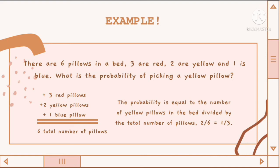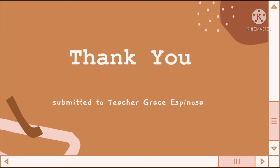Solution: 3 red pillows plus 2 yellow pillows plus 1 blue pillow equals 6 total pillows. The probability equals the number of yellow pillows divided by the total number of pillows. The answer is 2 over 6, which in lowest terms is 1 third. Thank you for listening.